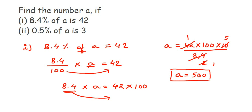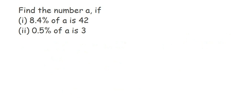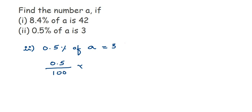Now for the second question. We have 0.5% — that's half percent — of a is 3. Remove the percentage sign and divide by 100, so it becomes (0.5/100) × a = 3. Now 0.5 has a decimal with one digit after it, so in the denominator we get 10, making the numerator 5. So it becomes 5 / (100 × 10) × a = 3, which is 5/1000 × a = 3.